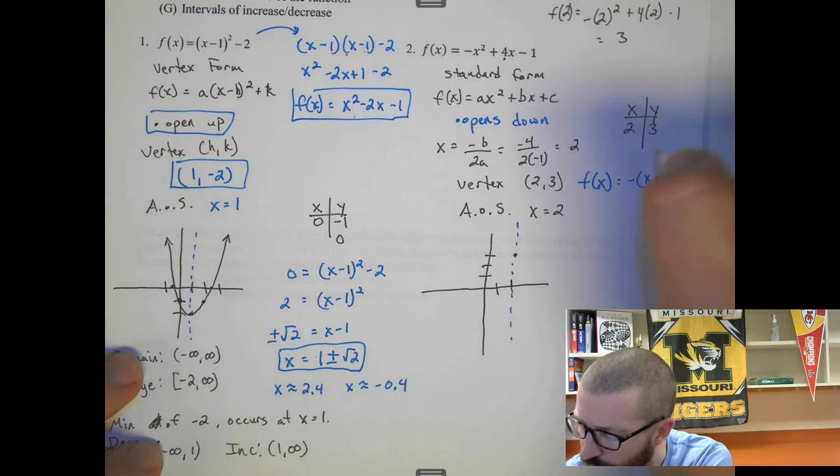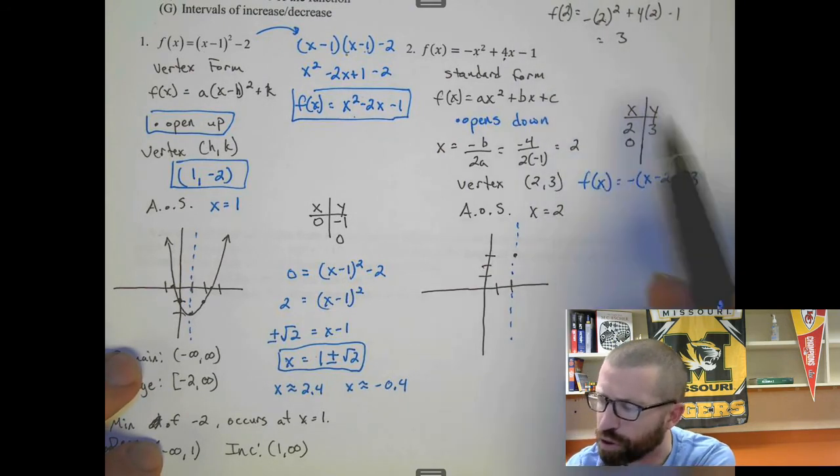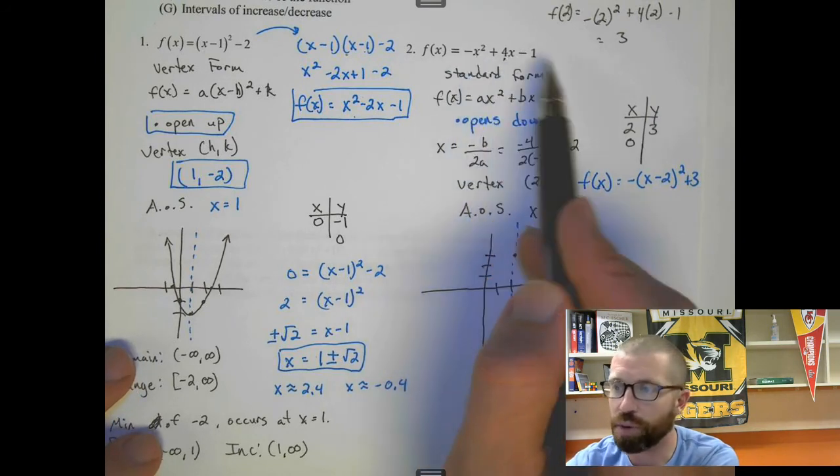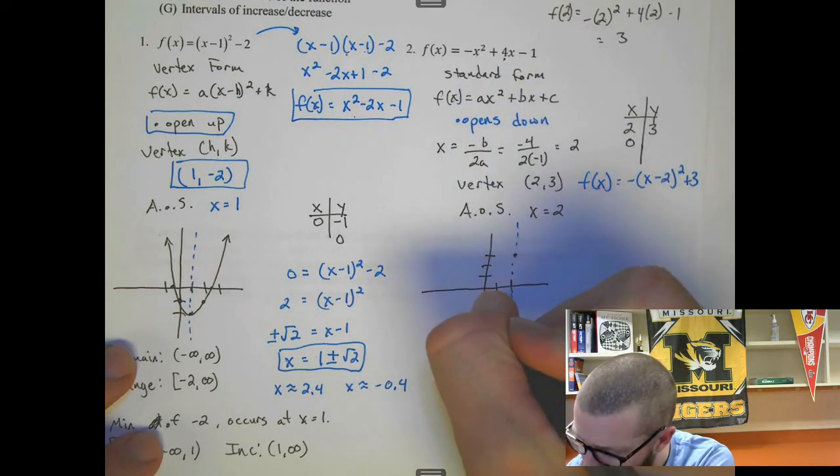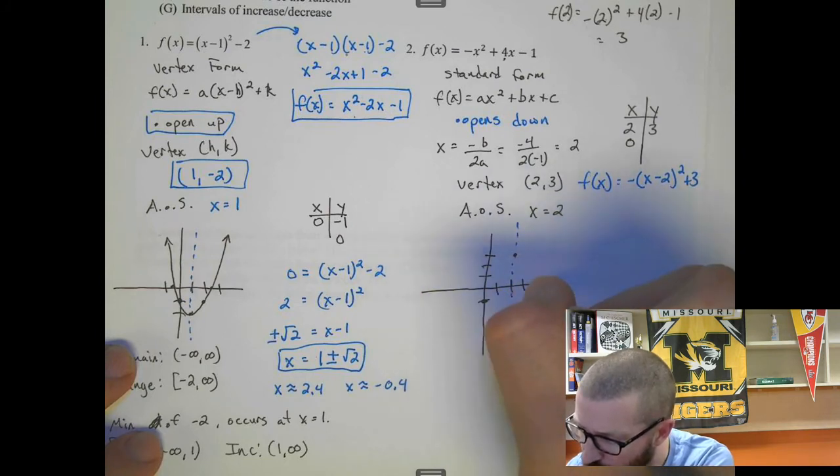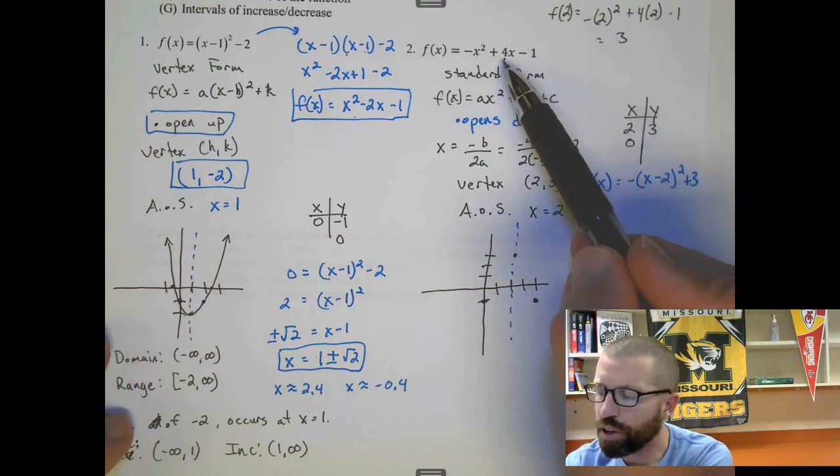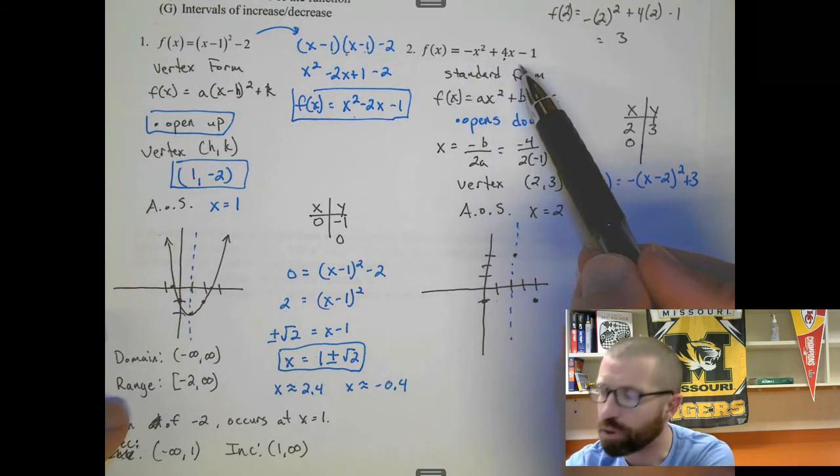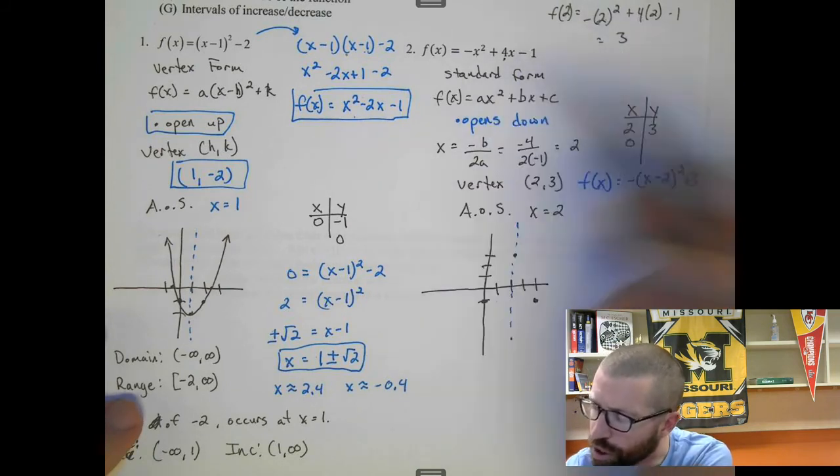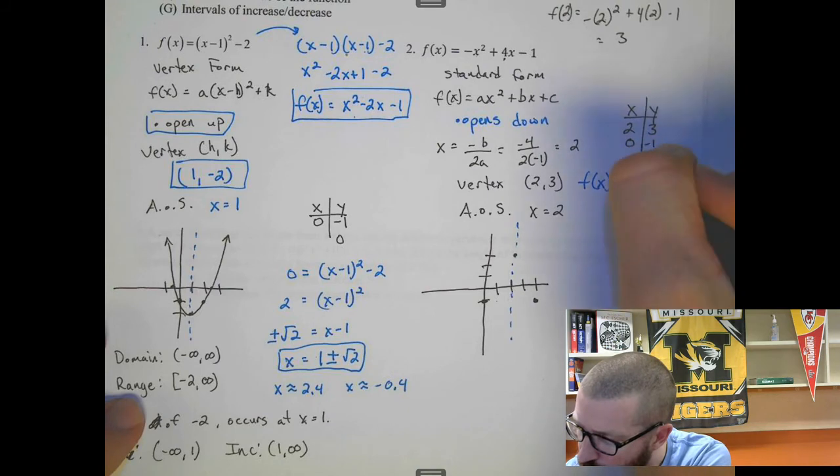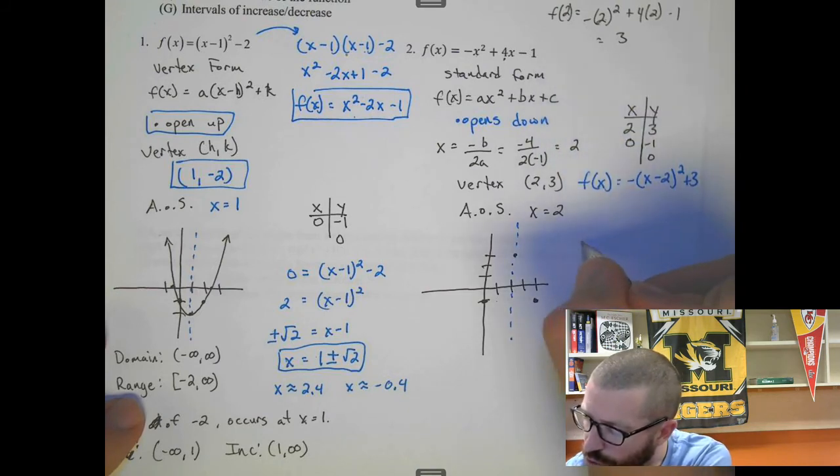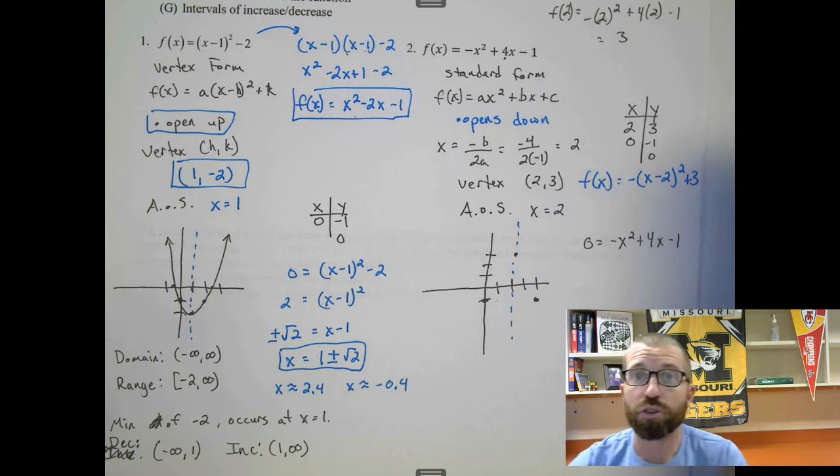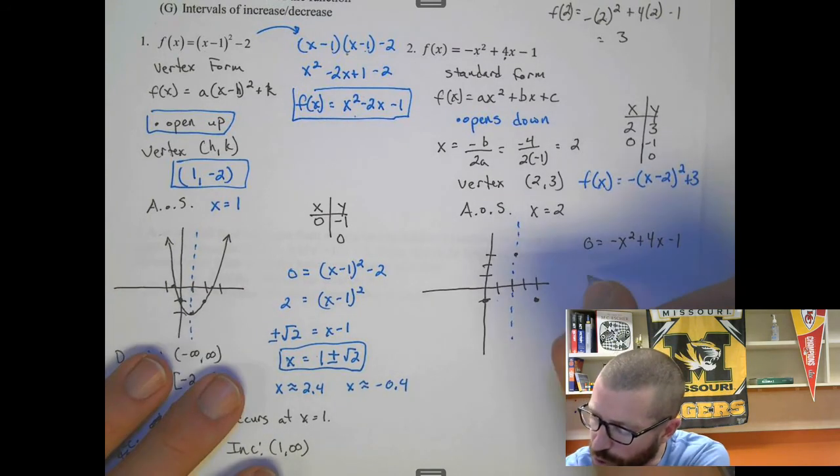And then let's find our intercepts. Let's just plug in 0 for x up here. So plug in 0. That's quick in standard form. 0, 0, minus 1. That gives me another point. To find the x-intercept you're going to have to use the quadratic formula. So we plug in 0 for y and then you get -x² + 4x - 1. So if that factored you could factor. We'll do the quadratic formula kind of quickly.